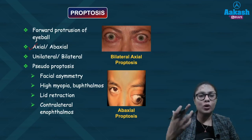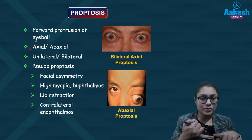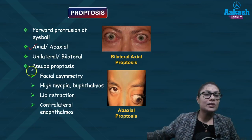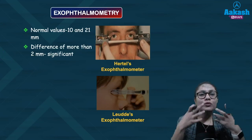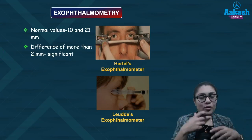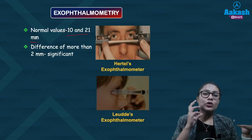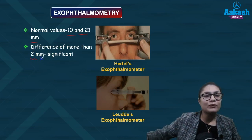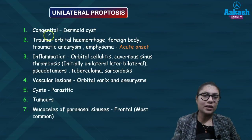Conditions that give an appearance of outward protrusion without actual protrusion are known as pseudoproptosis. Causes of pseudoproptosis include facial asymmetry, high myopia or buphthalmos, lid retraction, or enophthalmos of the contralateral eye. Exophthalmometry is the mechanism used to measure forward protrusion of the eye. Normal values are around 10 to 21 mm, and any difference of more than 2 mm compared to the baseline or the other eye would be termed significant and define proptosis.